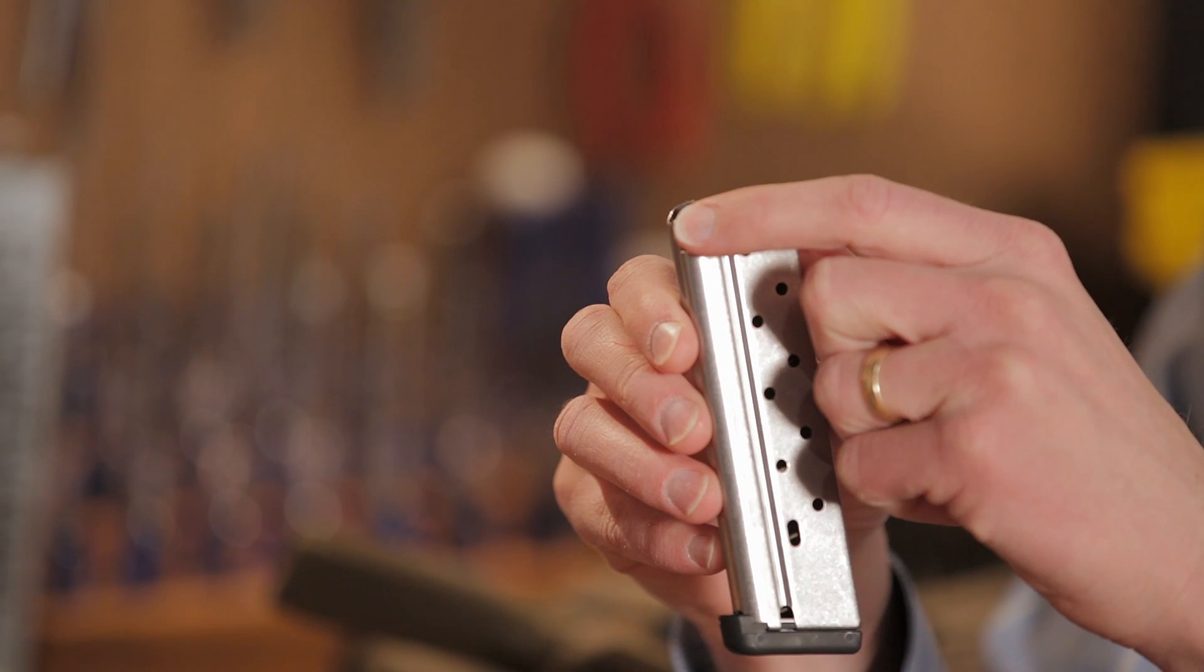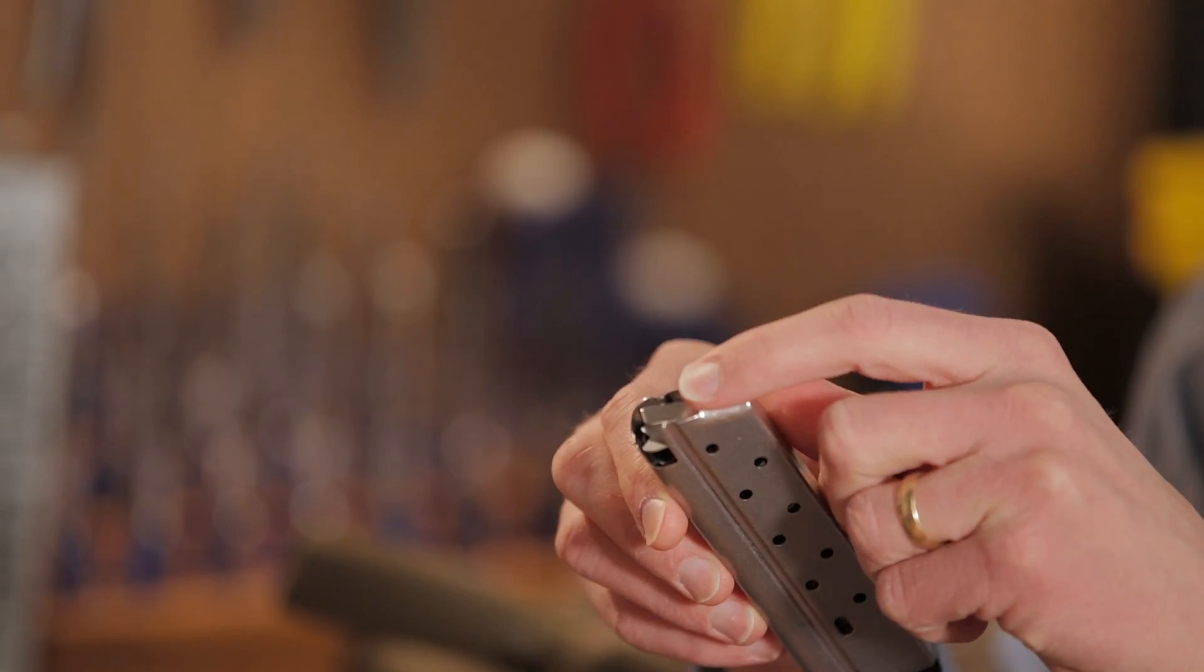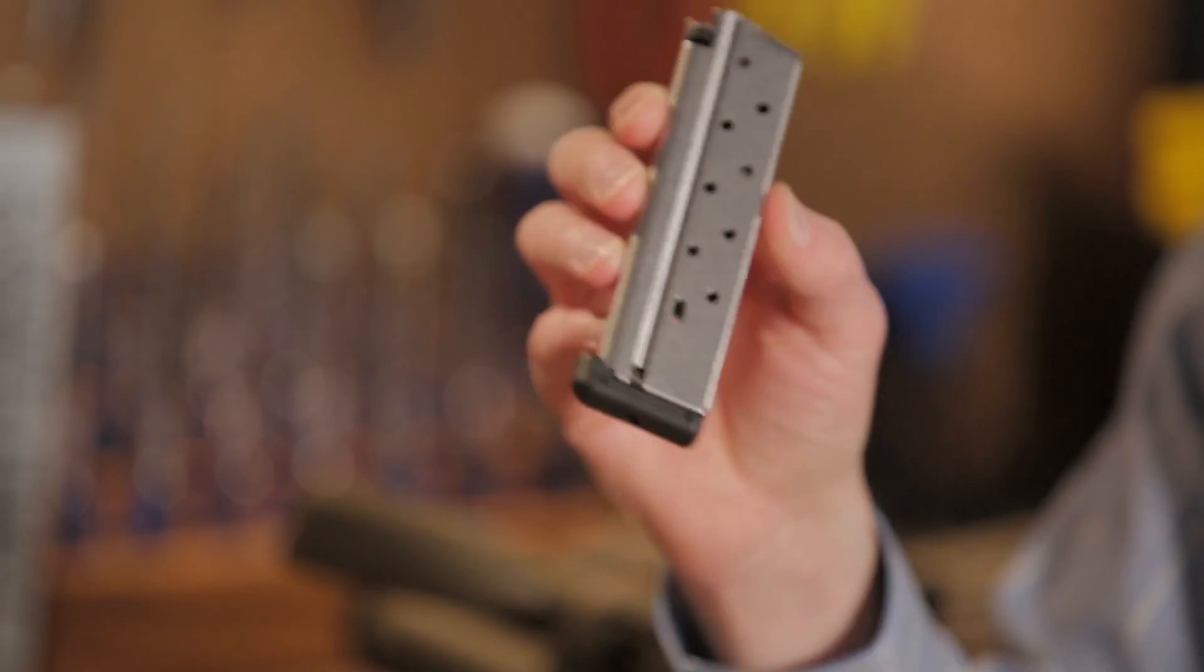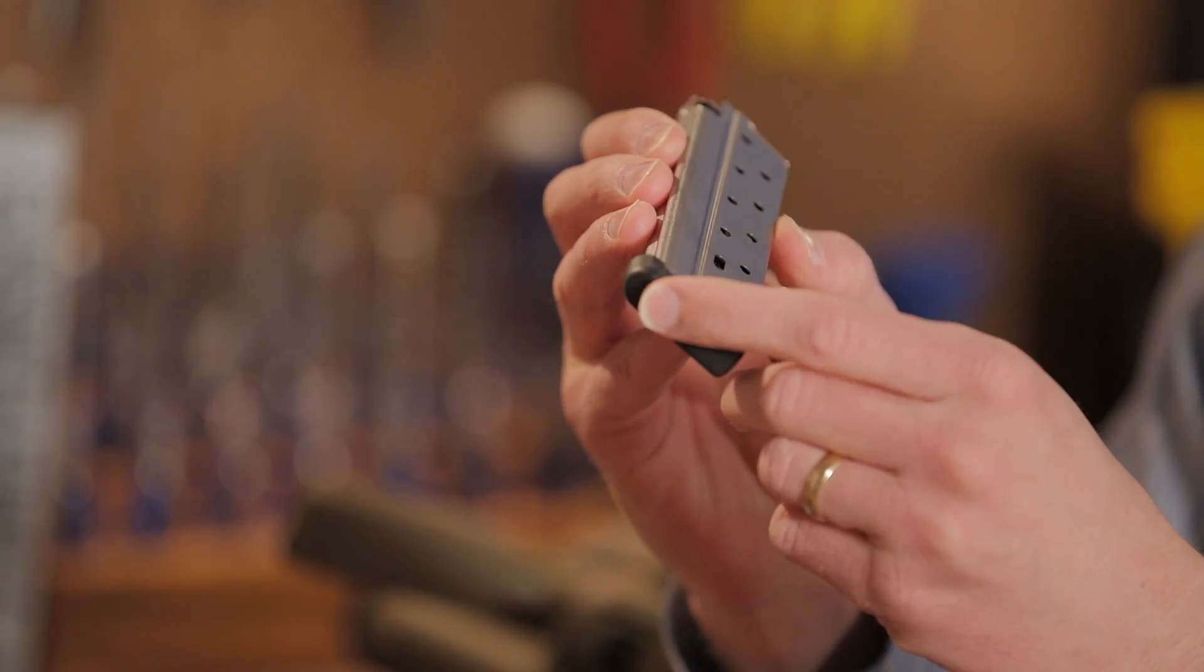It comes with an internal feed ramp for reliable feeding. It has his classic follower for also reliable feeding. Great magazine. It comes with a polymer base pad as well. That's new from Chip McCormick.